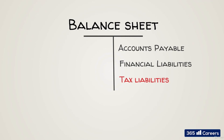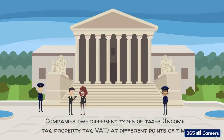Sometimes companies must pay taxes — actually, they must do that almost always. This is a very complicated issue because we can have different types of taxes, such as income tax, value-added tax, regional or state tax, and so on. Each type of tax could be due at different points in time, so we'll usually have an account on our balance sheet indicating how much money we owe the government. This is money we must pay in the short or in the long run depending on the tax obligation.